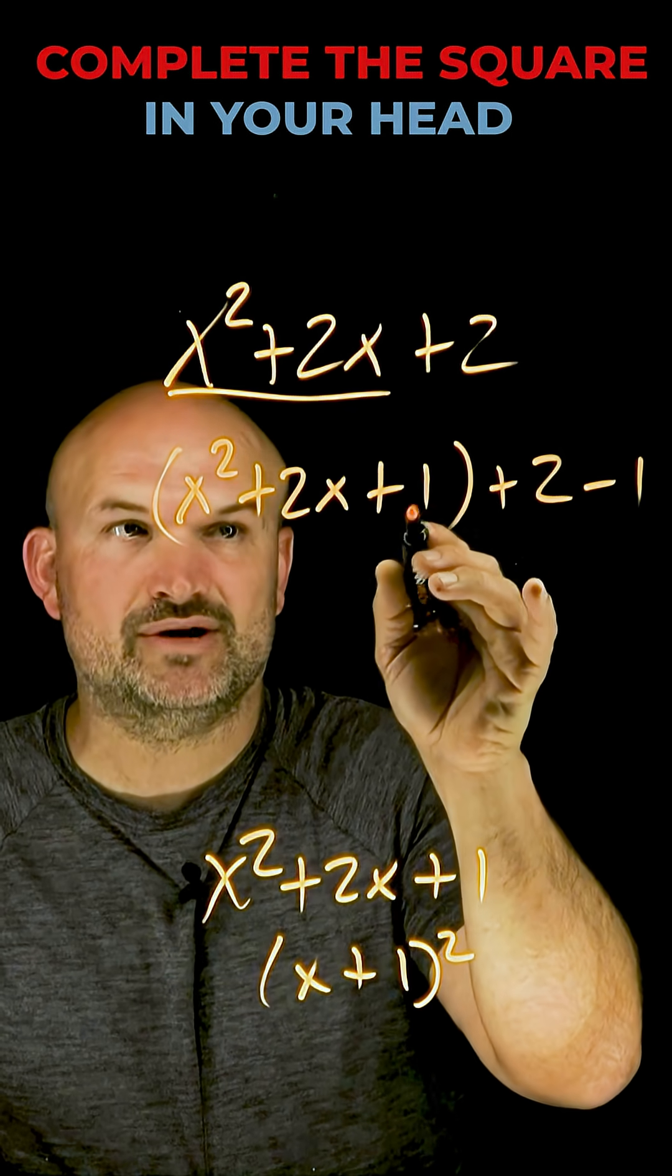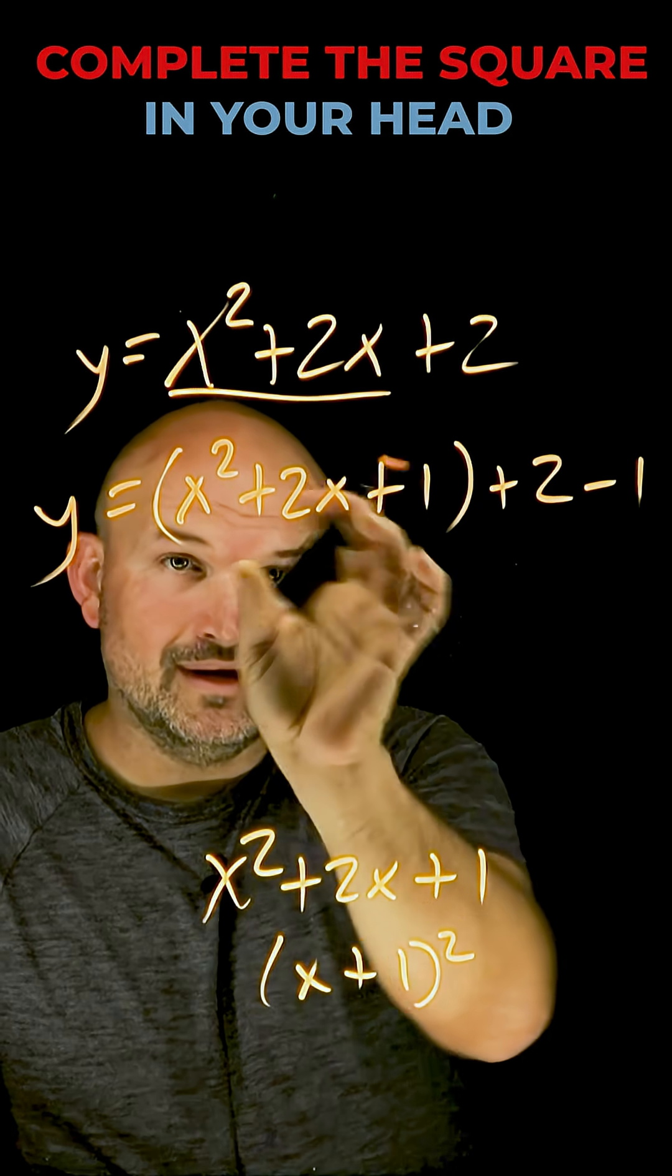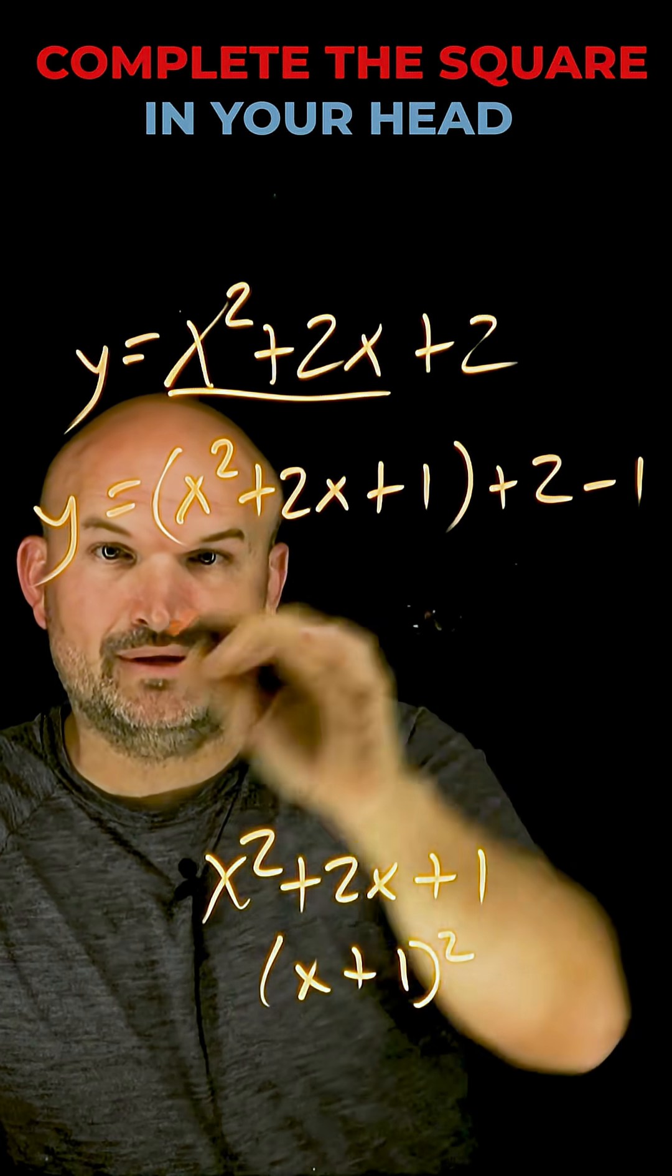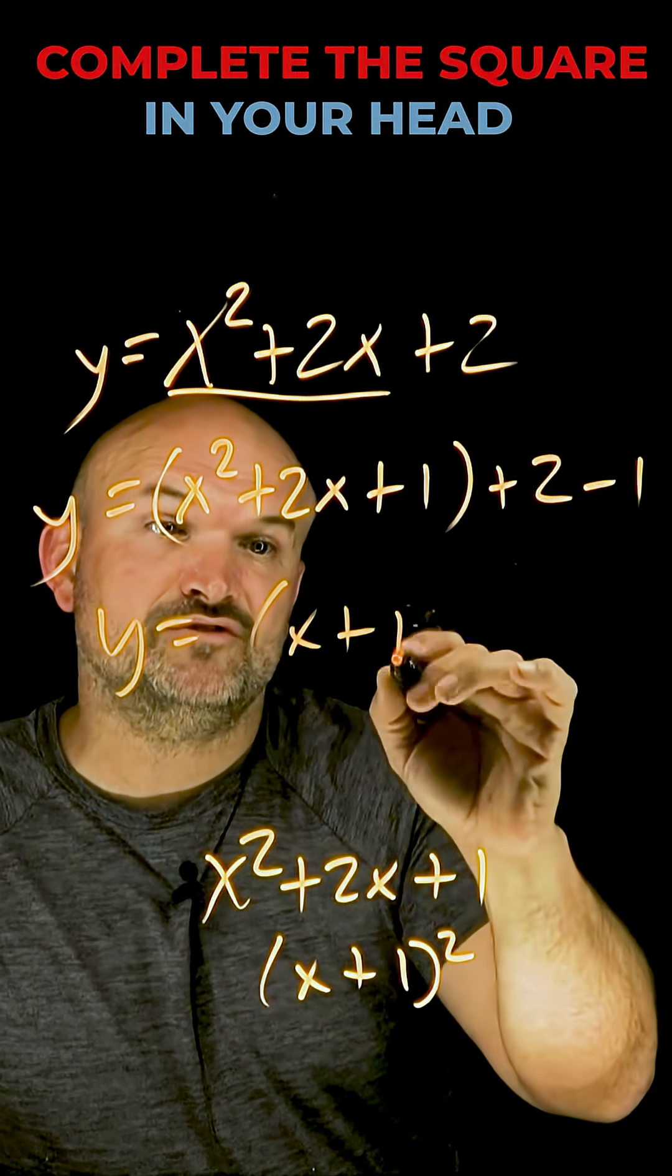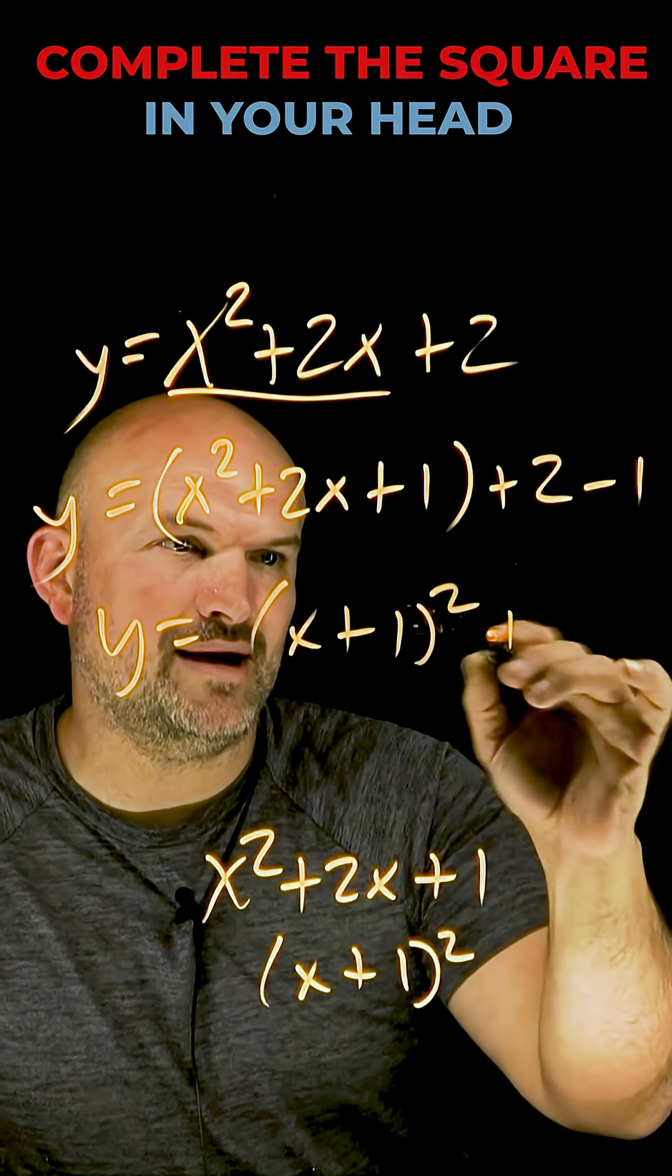If you're going to add it on one side of the equation, you have to subtract it on the other side, assuming this equals y. So I can create this perfect square and visualize that perfect square trinomial. I can also visualize the factored form. And then really the only math I'm doing is 2 minus 1, which holy crap, that's easy.